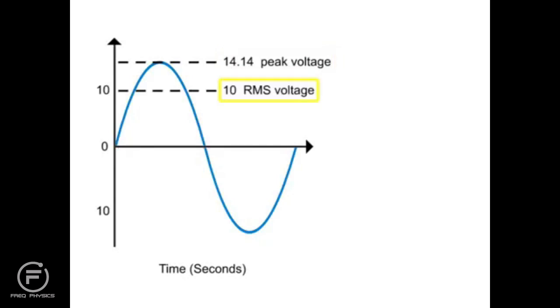Therefore, we can define the AC peak value as 1.414 times 10 volts or 10 RMS which equals 14.14 volts.